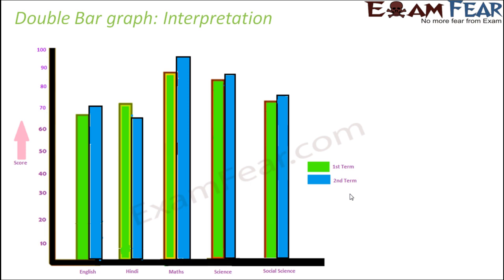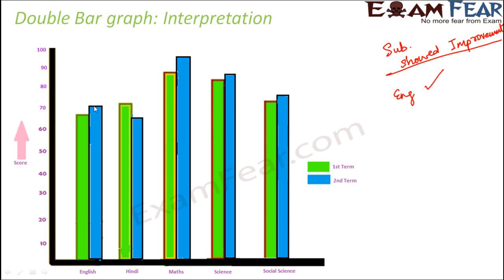Now looking at this double bar graph, what information can we get easily? For example: which subject shows the best improvement from first term to second term? Any subject that improved will have a taller second term bar. English showed improvement because the second term graph is taller. Hindi did not show improvement — the graph went down.